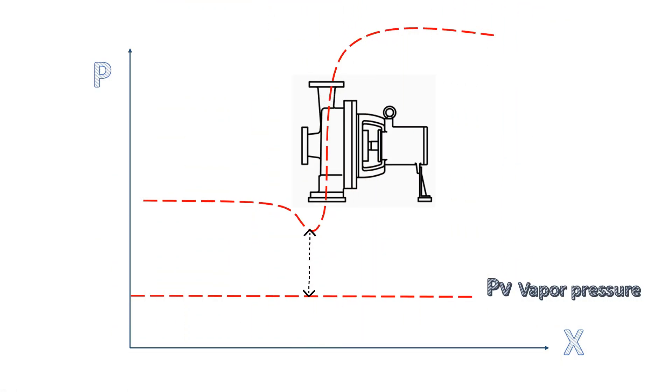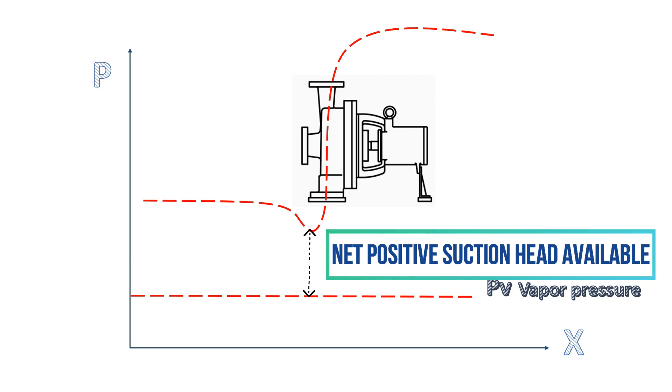This minimum absolute pressure at the pump inlet, which is above the vapor pressure represents the net positive suction head available. Now, I will explain how to calculate net positive suction head available at the pump inlet.